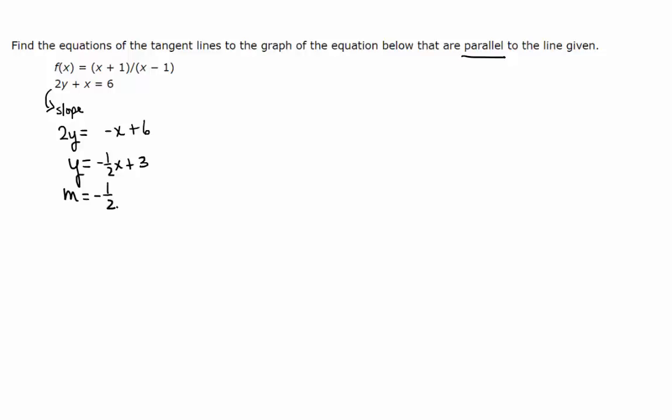We want our tangent lines to have that slope. So we want, how do we find the slope of a tangent line? Derivative. We want f prime of x to be equal to negative 1 half. We want to find the x values where that happens. Let's find f prime of x.